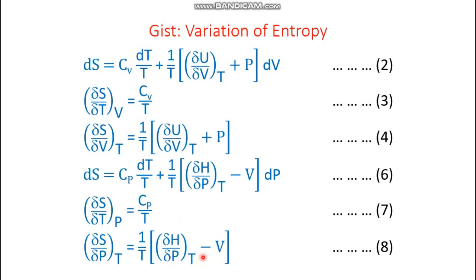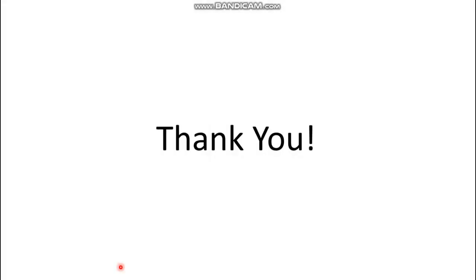To summarize, today we derived several key equations. Equation two is the generalized entropy expression in terms of temperature and volume. Equation three gives entropy change with temperature at constant volume. Equation four gives entropy change with volume at constant temperature. Equation six is the generalized entropy expression in terms of temperature and pressure. Equation seven gives entropy change with temperature at constant pressure. Equation eight gives entropy change with pressure at constant temperature. All equations apply to any substance. Thank you, have a nice day.